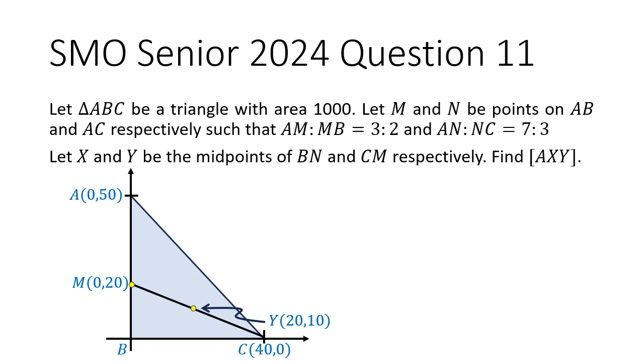For point N, N lies on the hypotenuse of AC. This point N is going to have 70% of the base, since the ratio of AN to NC is 7 to 3. So, I take the base of 40 times 0.7. This tells me that the x-coordinate of N is 28.